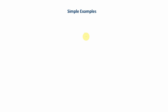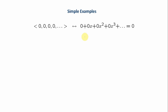We will understand it with the help of some simple examples. If I have the series 0, 0, 0, 0, 0 — meaning each and every term is 0 — then the ordinary generating function is 0·1 + 0·x + 0·x² and so on, which equals 0. So for this particular series, the generating function is equal to 0.